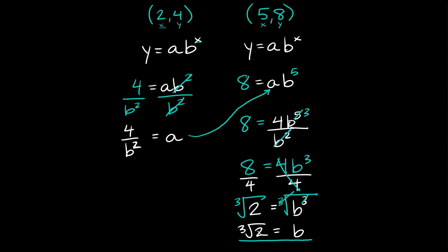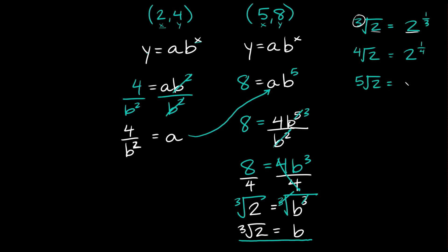One quick thing we should do is rewrite this using an exponent. The cube root of 2 is the same thing as 2 raised to the 1/3 power — the number inside the radical stays the same, and the index 3 becomes the fractional exponent 1/3. For example, the 4th root of 2 equals 2 to the 1/4, and the 5th root of 2 equals 2 to the 1/5. This is a helpful exponent rule to know, and it'll be really helpful in this problem.